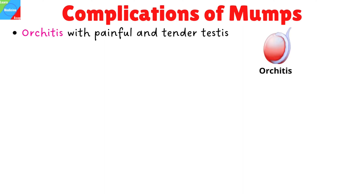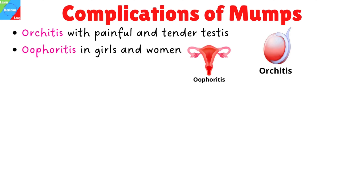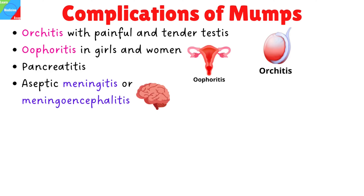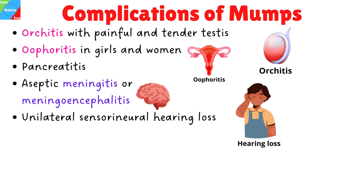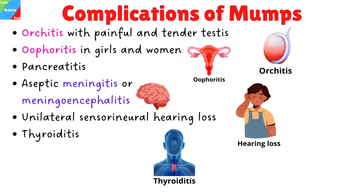If not treated or poorly managed, mumps can lead to the following complications: orchitis with painful and tender testes; oophoritis in girls and women; pancreatitis; aseptic meningitis or meningoencephalitis, which presents with headache, neck stiffness, and drowsiness. Unilateral sensorineural hearing loss can occur due to involvement of the labyrinth. Other complications include thyroiditis, myocarditis, nephritis, and arthritis.